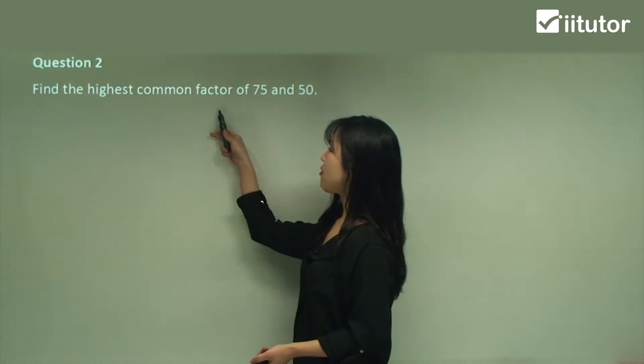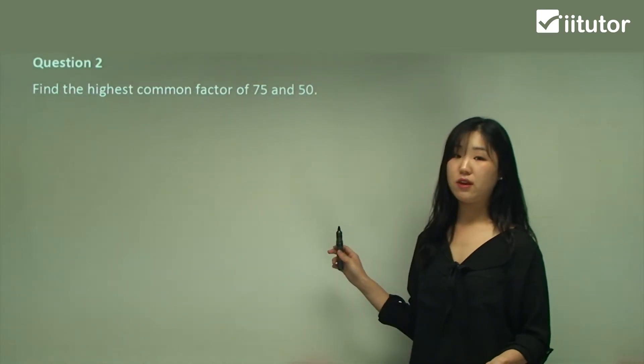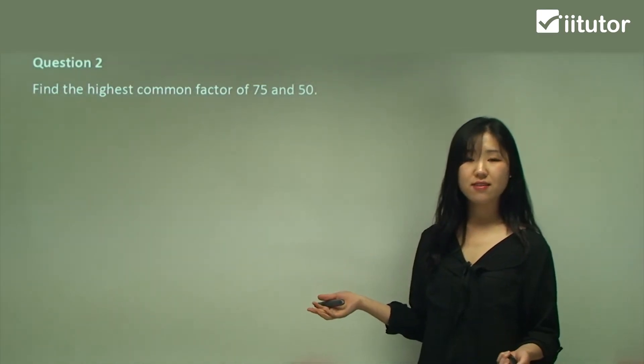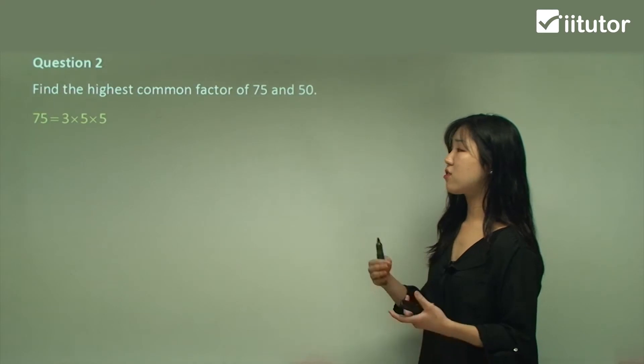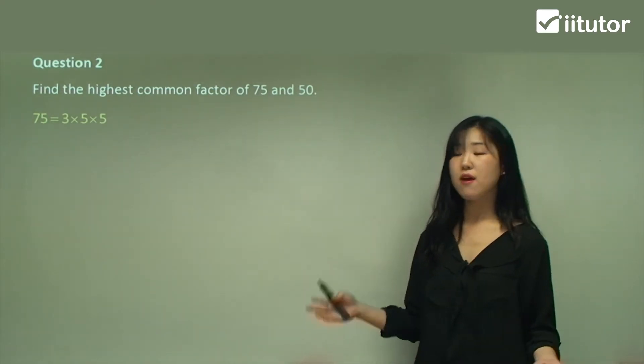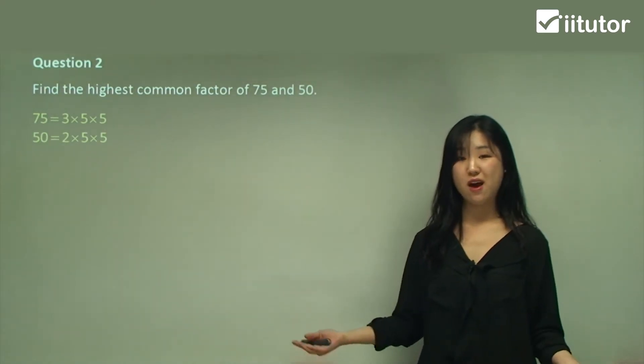Question 2: Find the highest common factor of 75 and 50. You do the exact same thing. For 75, it's 3 times 5 times 5, and 50 is 2 times 5 times 5.